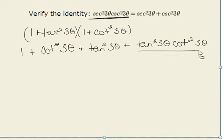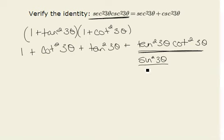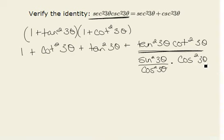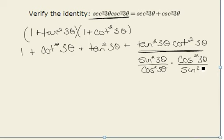We recognize that the last term is multiplying two reciprocals, so that product should equal 1. We can verify this by rewriting tangent squared of 3 theta as sine squared of 3 theta over cosine squared of 3 theta, and cotangent squared of 3 theta as cosine squared of 3 theta over sine squared of 3 theta. The numerators and denominators cancel to make 1.